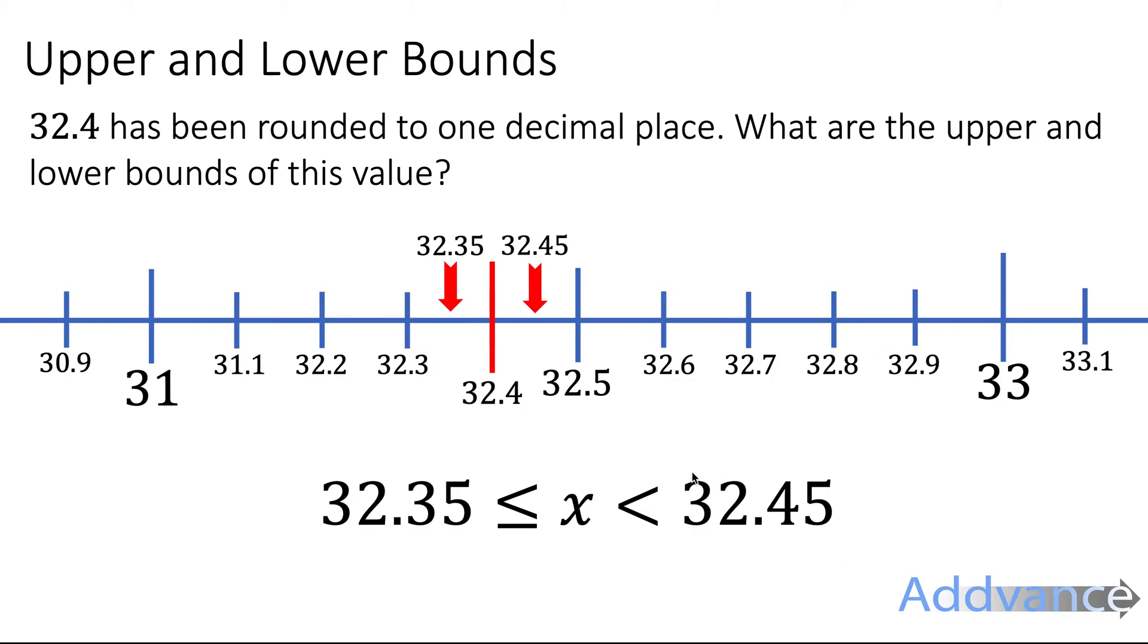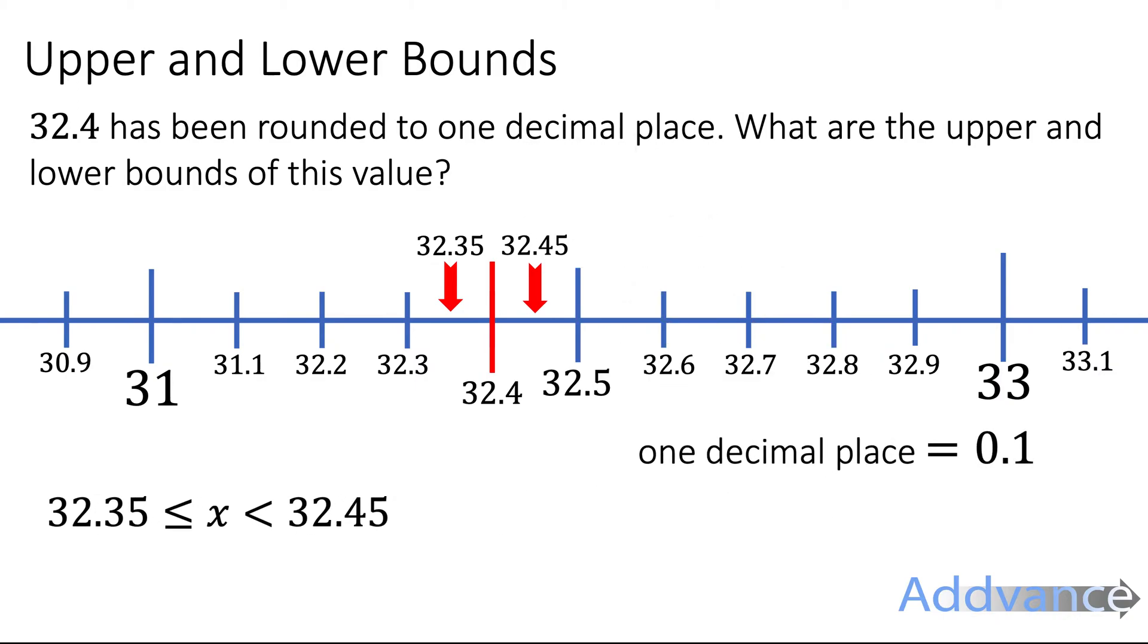It could have been 32.35, so we could say it's equal to, but it has to be slightly less than 32.45 because actually 32.45 will round up. So you have to remember the inequality goes this way with a less than or equal sign on this side and less than sign on this side. If you get confused, a good way to think about this is one decimal place represents 0.1.